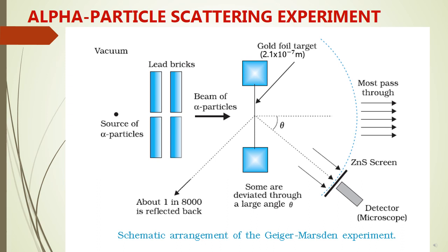Scattering takes place and scattered alpha particles are detected. As the name suggests, the movable detector can move and is not fixed. When an alpha particle hits the zinc sulfide screen, flashes are produced, which are enhanced and seen through a microscope.